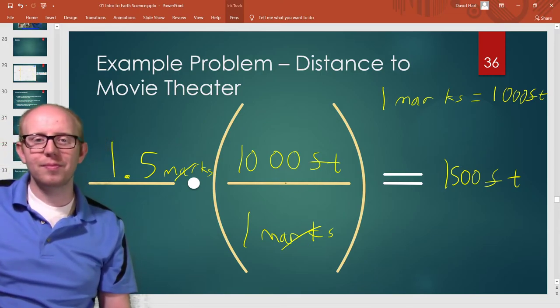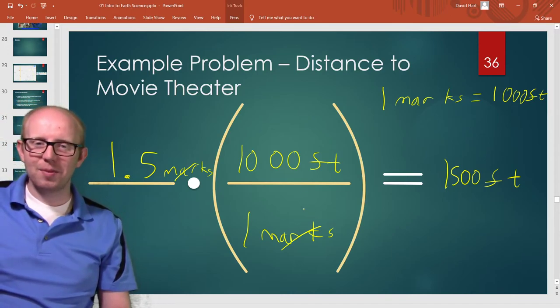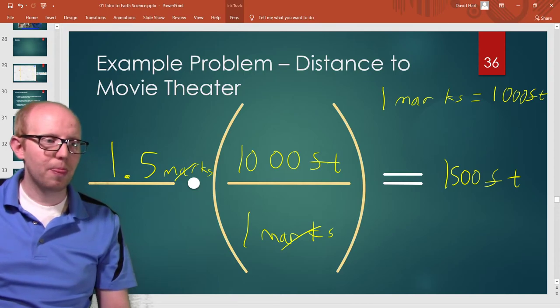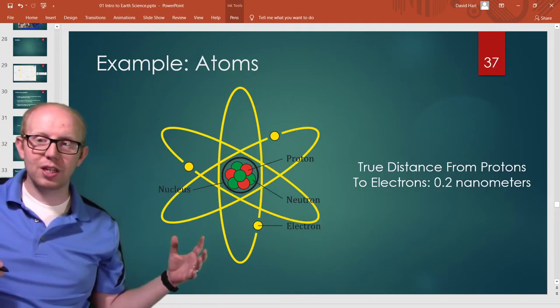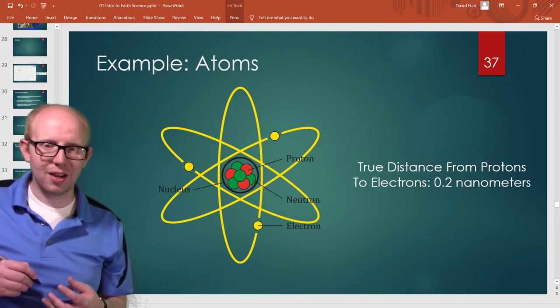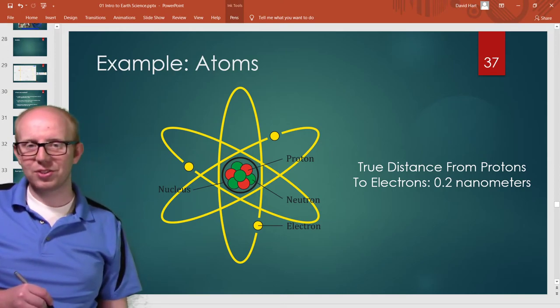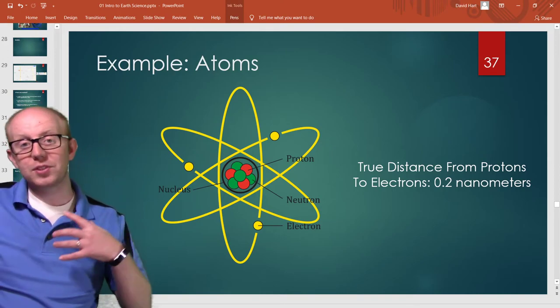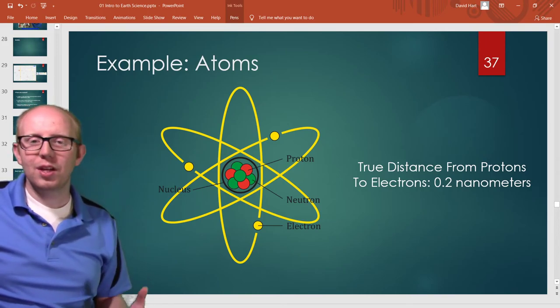Let's do another example. So let's say we're trying to represent the space between protons to electrons in an atom. Well that actual distance is about 0.2 nanometers, super tiny. Scales can be used for really big things or super tiny things both ways.